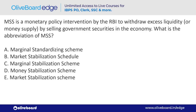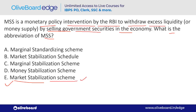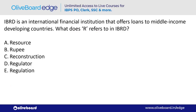MSS is a monetary policy intervention by RBI to withdraw excess liquidity by selling government securities in the economy. MSS stands for Market Stabilization Scheme — by this, liquidity in the market is stabilized.